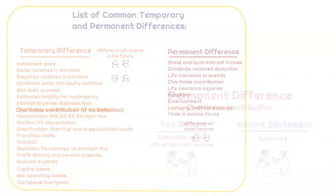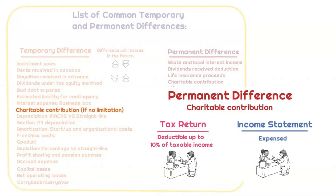Charitable contributions can be a temporary difference or a permanent difference. We need to identify if there is a limitation and if the amount contributed exceeds that limitation. On the financial statements we can take the entire charitable contribution as an expense; however, we're only limited to 10% of the corporation's taxable income as a deduction on the tax return. It might carry over into the future, in which case this is a discrepancy that reverses, making it temporary. But if some of the charitable contribution is not going to be deductible in the future, it would be a permanent difference.